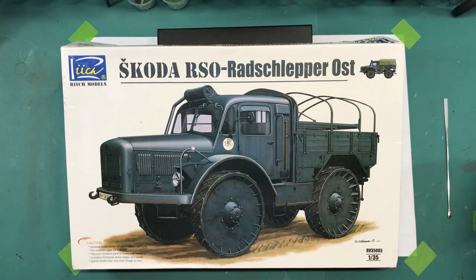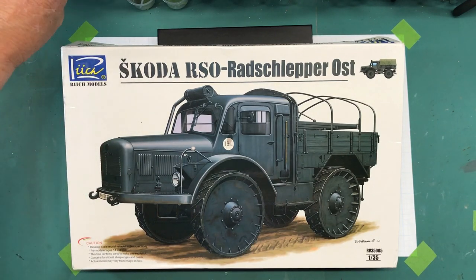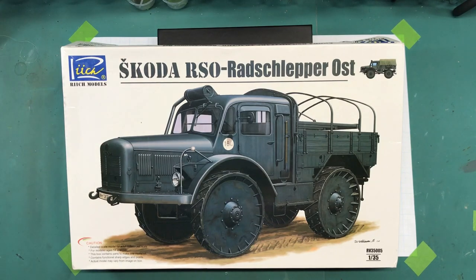So there you go. That is an in-box review of the Skoda RSO Radschlepper Ost kit number RV 35005. So my thoughts on this one, just looking at the plastic it looks really nice. As long as the parts all fit together well, this looks like a really really nice kit. So again this was done for my friend Keith Short. So Keith when you finally watch this I hope you enjoy it. And I can't wait to see you build this one actually because I'm really eager to see how well it goes together. So thanks for watching. As always, if you have any experience with this kit or with this brand, put some comments down in the comment section down below. Let me know what you think because I'm really intrigued by this particular kit. It's really kind of cool.